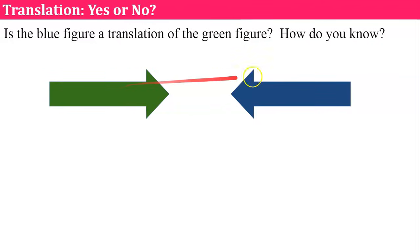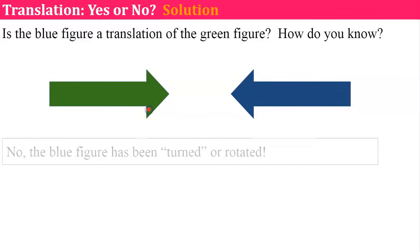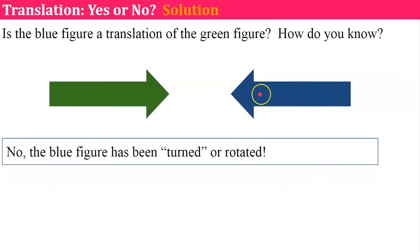How about this? Is this blue figure a translation of the green figure? And how do you know? The answer would be no because this blue figure either had to be turned or rotated. If I just slide or translate the green arrow over, it does not perfectly align. I would have to turn it to get it to overlap. So therefore, this is not a translation.